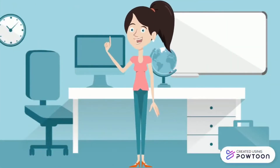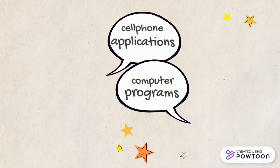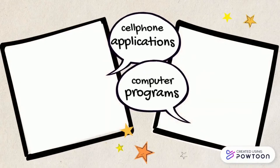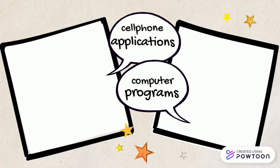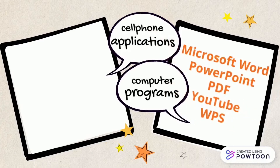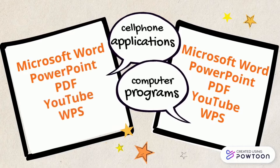Now, let's have a quick activity. In your activity notebook, list two names of cell phone applications and two names of software or programs installed in your smartphone or computer that are helpful in your study. You may have written applications such as Microsoft Word, PowerPoint, PDF, YouTube, WPS, and many others. These are the common multimedia resources when we give information, explanations, and instructions.